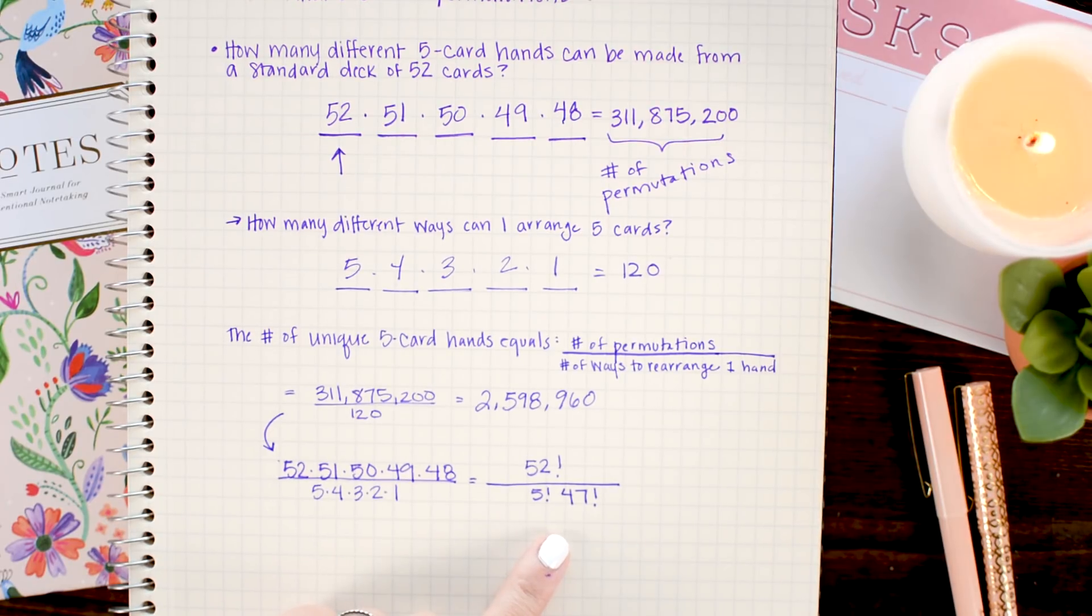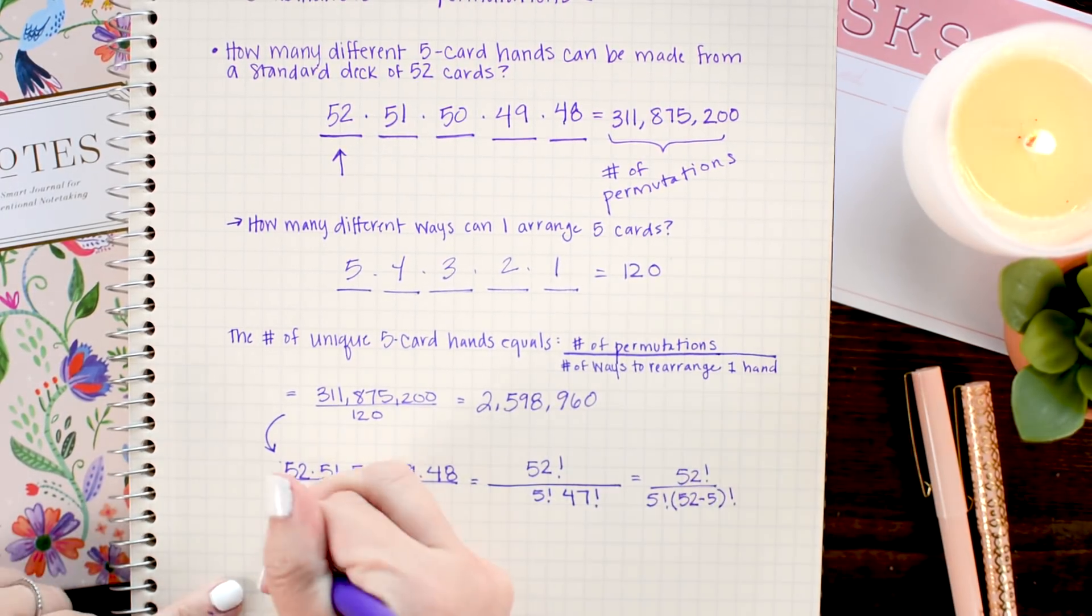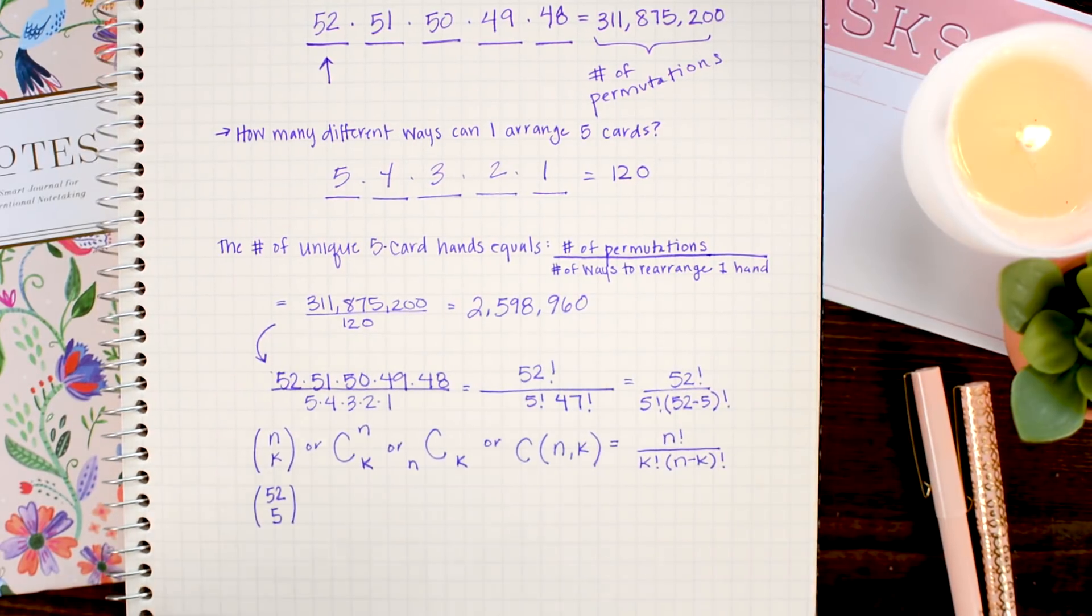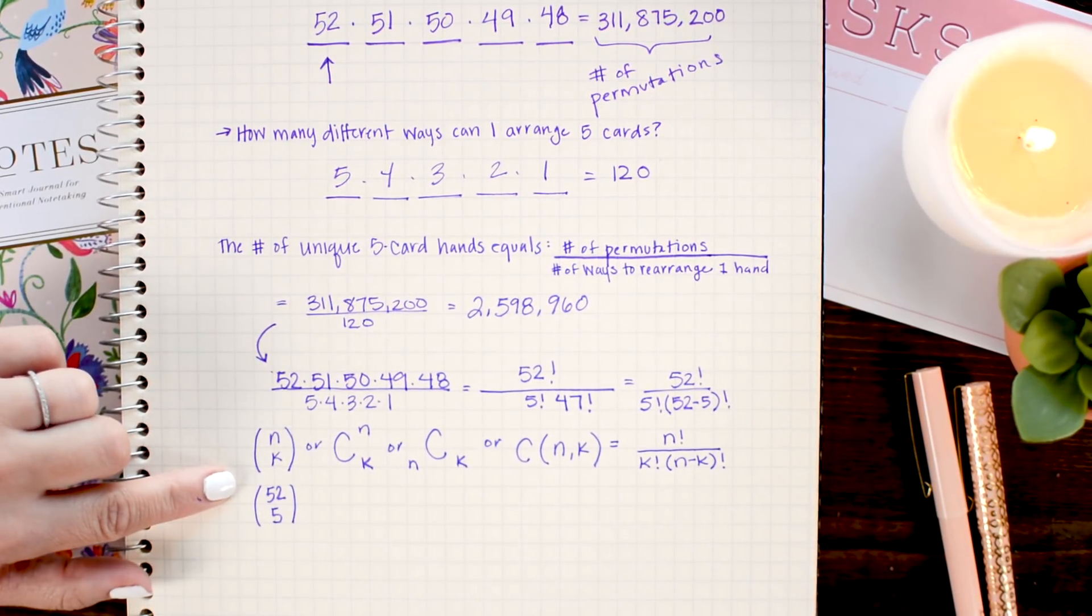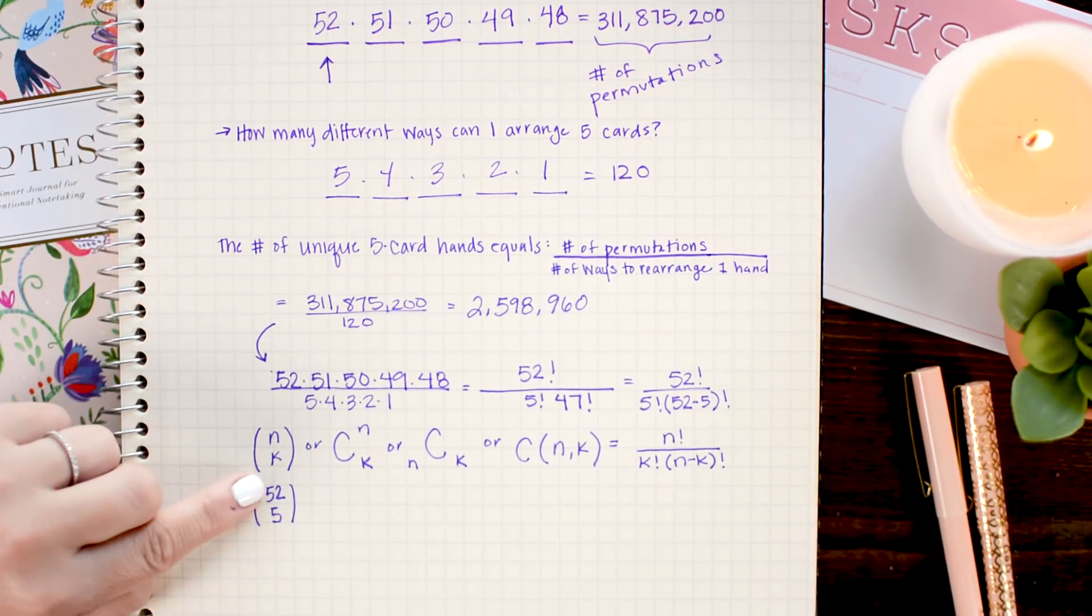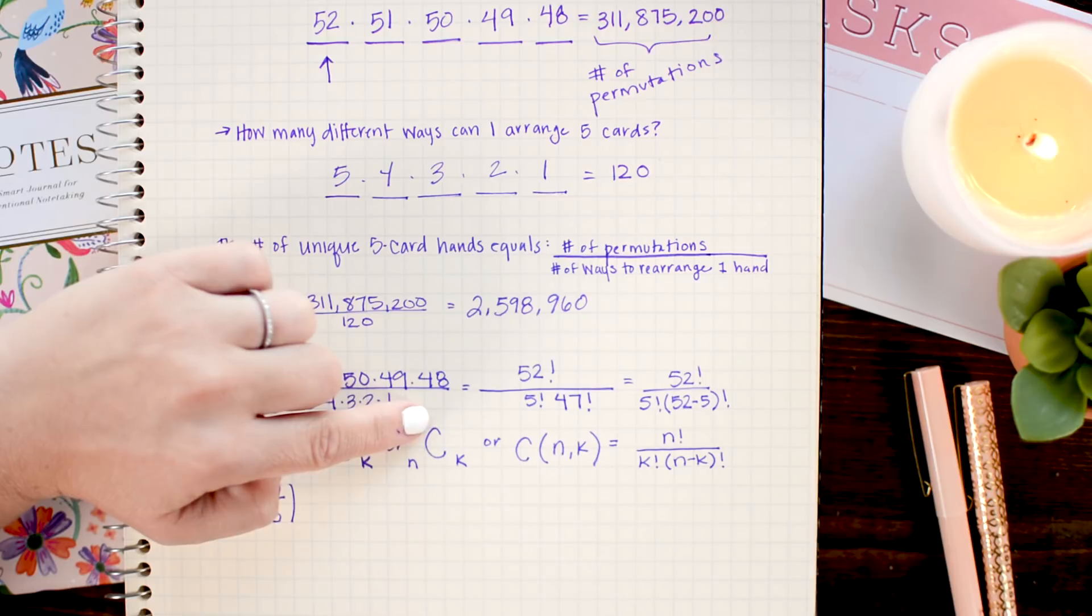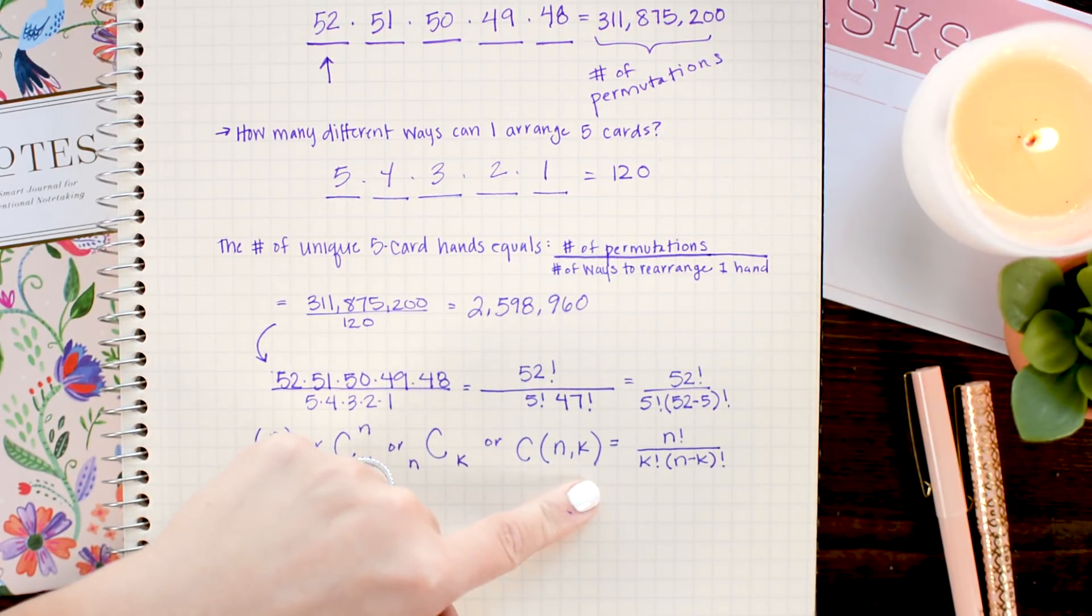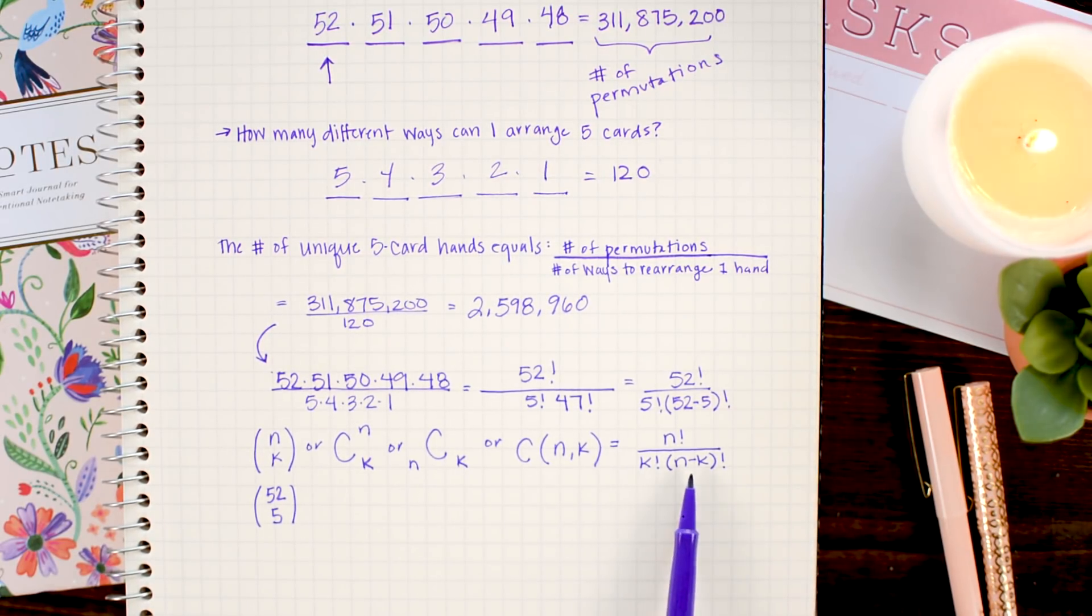All right. Now, what we have here is the definition of the combinations formula. So, this can be rewritten as... So, these are all notations for the combinations formula. And you would read it as N choose K. So, in some books, you might see it written as an N on top of a K inside of parentheses. Or as a giant C with an N superscript and a K subscript. Or as a giant C with a little N in front and a little K after. Or as a C with an N and K in parentheses. But they all mean the same thing. They are all the choose or combinations formula.